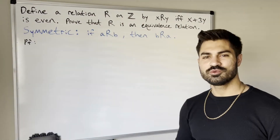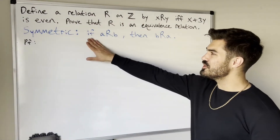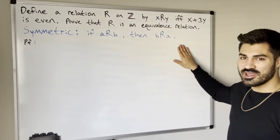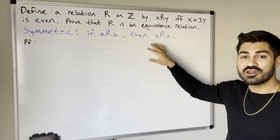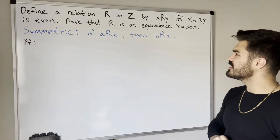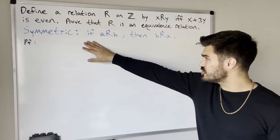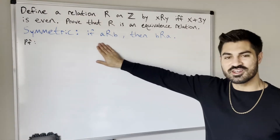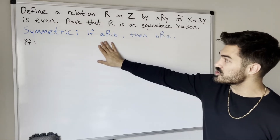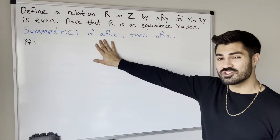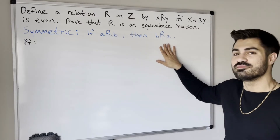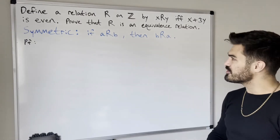Now let's prove the relation is symmetric. Symmetric means if a is related to b then b is related to a, for every a and b in the integers. This is a conditional statement, so we'll use the direct proof method: assume the if-part is true and show it guarantees the then-part is true.